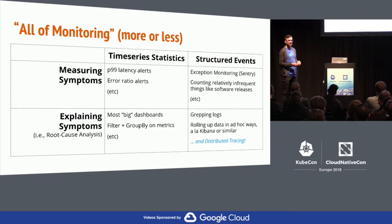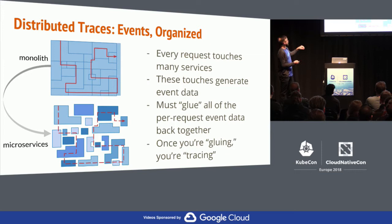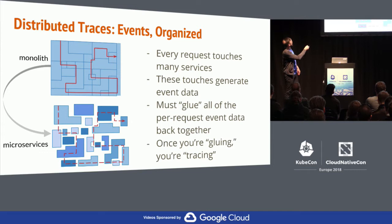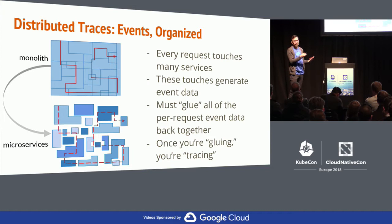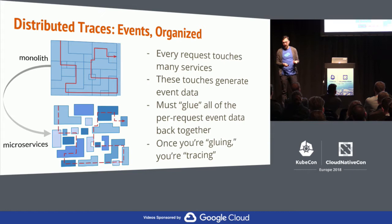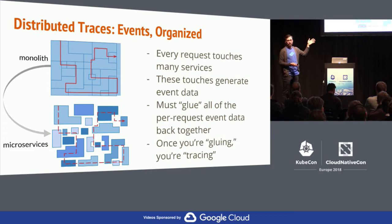This is a diagram I like to use. On the top is an illustration of what a transaction might look like in a monolith — it goes across package boundaries. When you move to microservices, your packages become microservices, but your transaction still goes through them. So in order to understand the basic story of an individual transaction, you need some new technology. You can't just look at your logs or whatever you did in the monolith. Distributed tracing is about taking requests and telling a clear story about them as they go through a system.